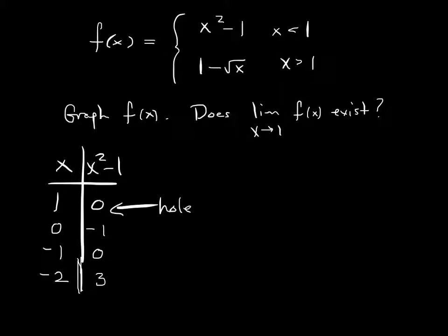And then for the other chart, I'm going to do x and 1 minus root x. And I'll plug in x is 1, and I'll get 0. And then I'm going to plug in, you know what, I'm going to do 4, and then I'll get 1 minus the square root of 4, 1 minus 2, I'll get negative 1.